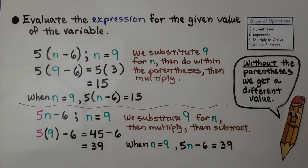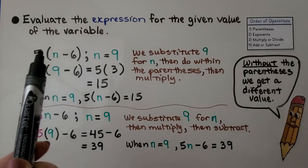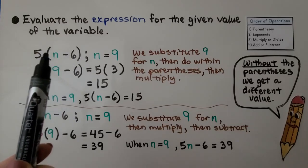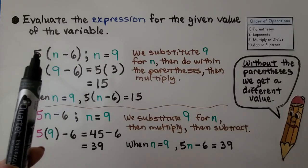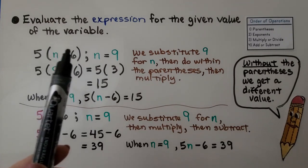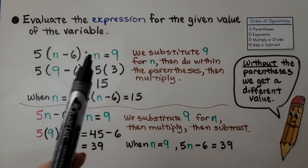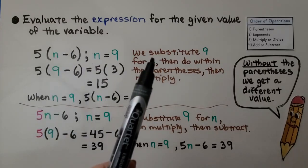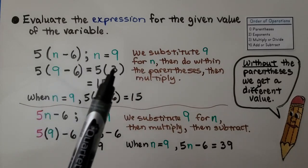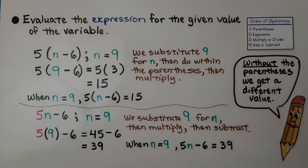We need to evaluate the expression for the given value of the variable. We have 5 times (n minus 6). When a number is right next to parentheses, that means to multiply. Since n is equal to 9, we substitute 9 for n and do inside the parentheses first: 9 minus 6 is 3. Then we multiply: 5 times 3 is equal to 15. So when n equals 9, 5(n − 6) equals 15.